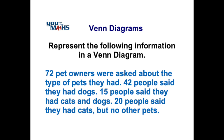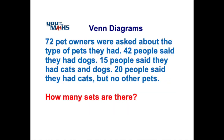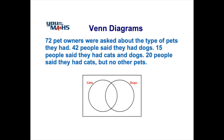A Venn diagram enables us to do that. Before we start drawing our diagram, we need to determine how many groups or sets there are. In this case we have two distinct groups: people that own dogs and people that own cats. That's not to say there isn't overlapping — our Venn diagram will take care of that.